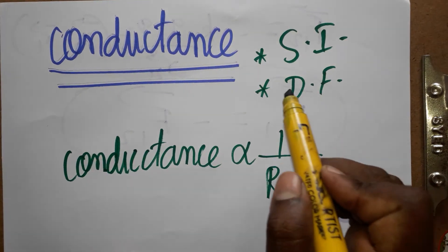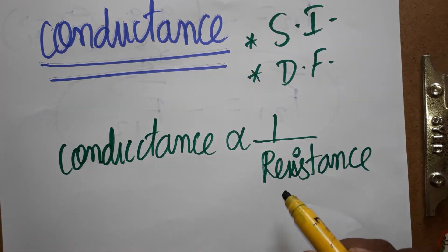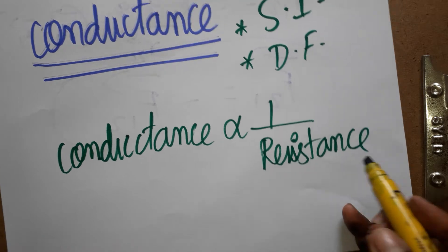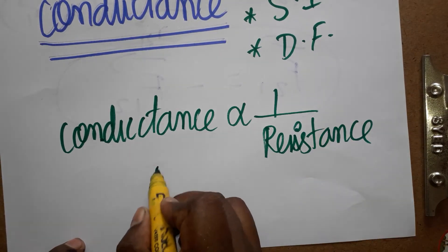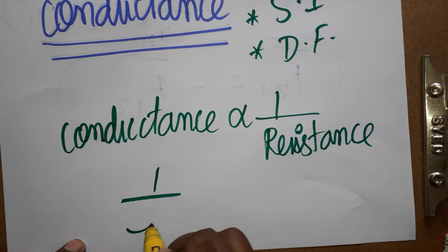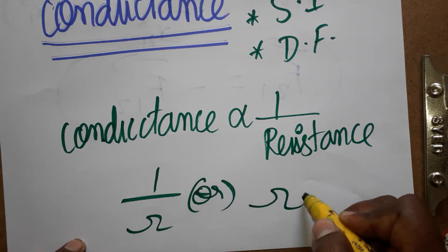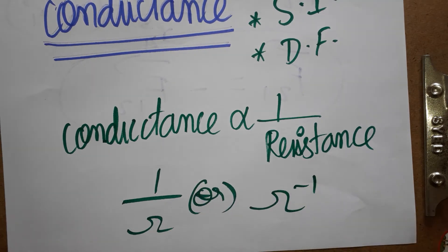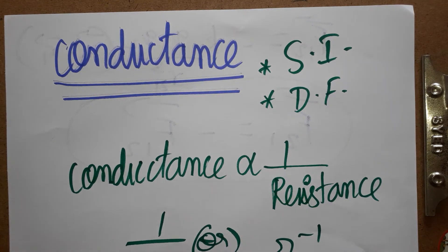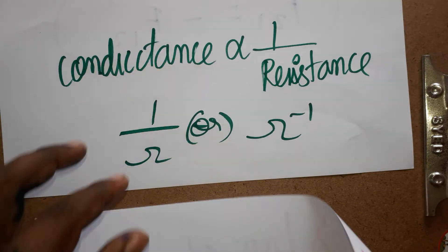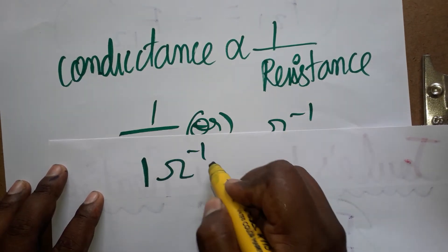Today we are going to see conductance: its SI unit and dimensional formula. Conductance is inversely proportional to resistance. Resistance we already know is ohms, so conductance is 1 by ohms, which we can write as ohm inverse. So now we are going to discuss what is the SI unit of conductance — it is ohm inverse.